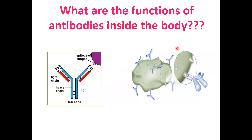Looking at the structure of the antibody in the diagram: the antibody consists of four polypeptide chains — two light chains and two heavy chains. The antibody (immunoglobulin) is divided into the Fc fragment, which is the constant fragment (the lower portion), and the Fab fragment, which is the variable fragment — also called the antigen-binding region or fragment antigen-binding (Fab).